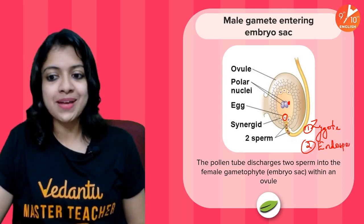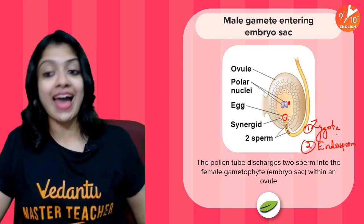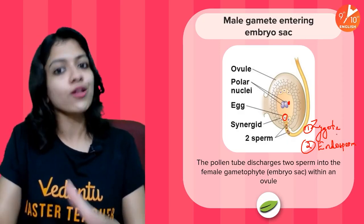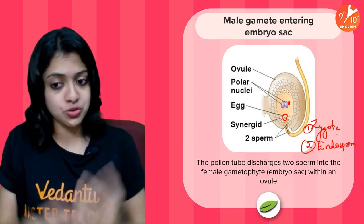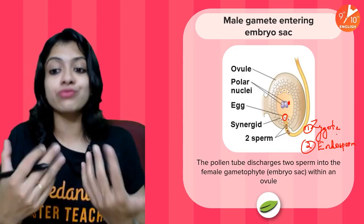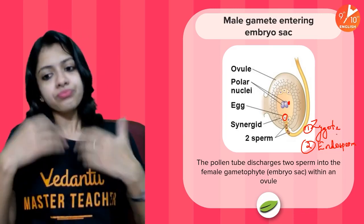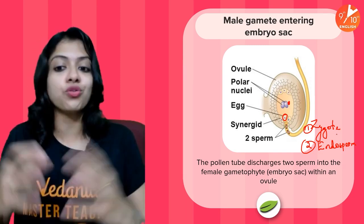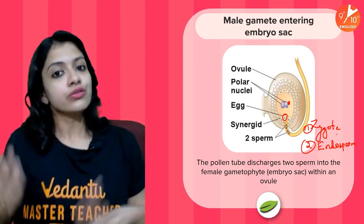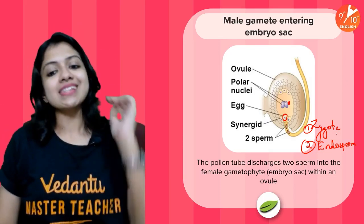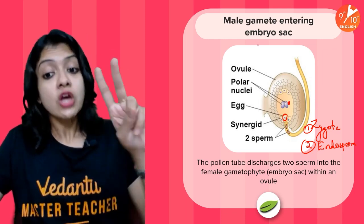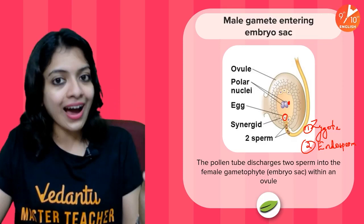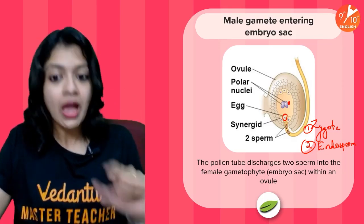What about the other sperm cell? The other sperm gets released further into the ovule and fuses with what we call the polar nuclei to form what we call the endosperm. The endosperm is the tissue that helps in the nourishment of the growing embryo. The zygote develops into the embryo and grows further until eventually seeds and fruits are formed — the ovule develops into the seed, and the ovary develops into the fruit. This is what we mean by double fertilization, because two sperm nuclei are involved.